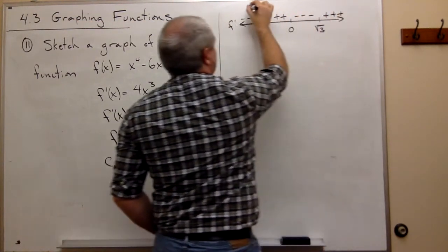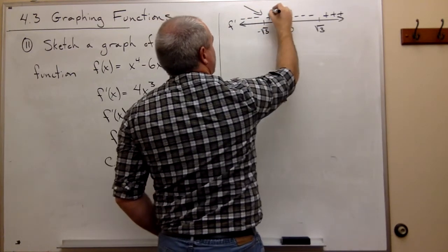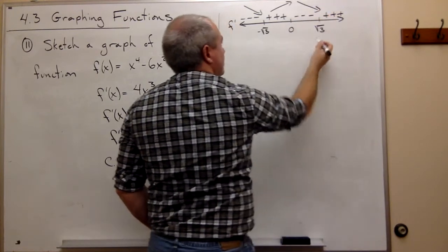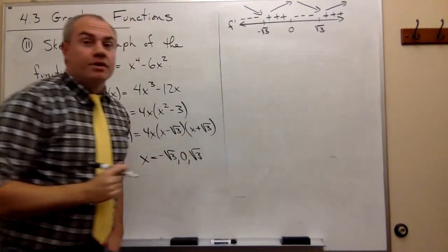So I know that this thing is decreasing until it gets to minus root 3. Then it's increasing until it gets to 0. Then it's decreasing until it gets to root 3. Then it's increasing onto infinity.